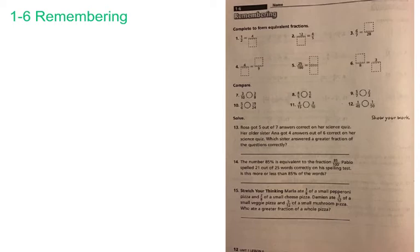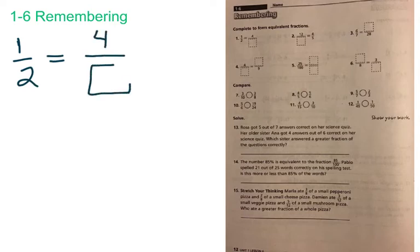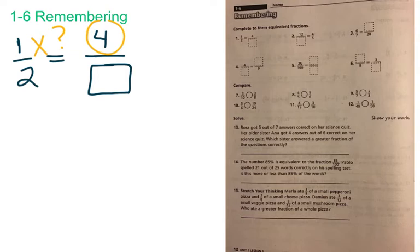When we look at number 1, we have 1 half, and it's equal to some equivalent fraction with a numerator of 4. We have to ask ourselves: do we multiply 1 by some number to get 4, or do we divide it? Well, 4 is larger than 1, so we're multiplying. What number times 1 is equal to 4? We know 1 times 4 is equal to 4, so we have a multiplier of 4. Remember, anything we do to the numerator, we do to the denominator — it's always the same.